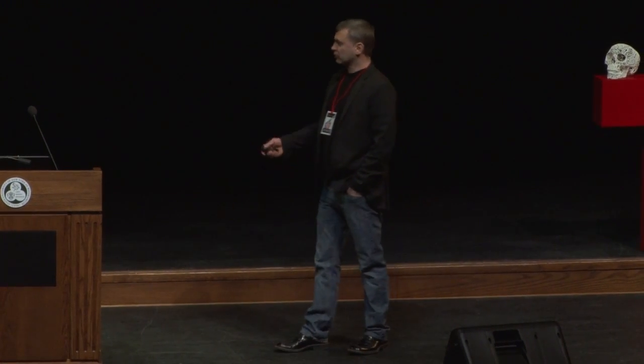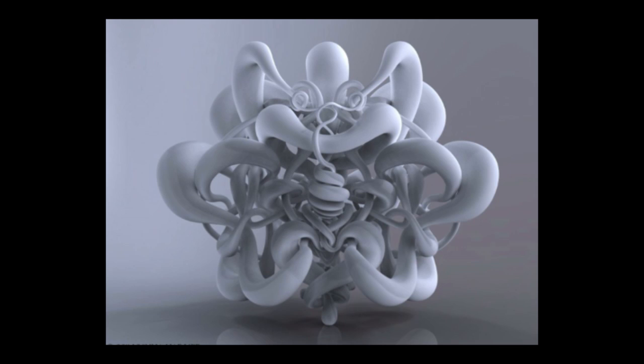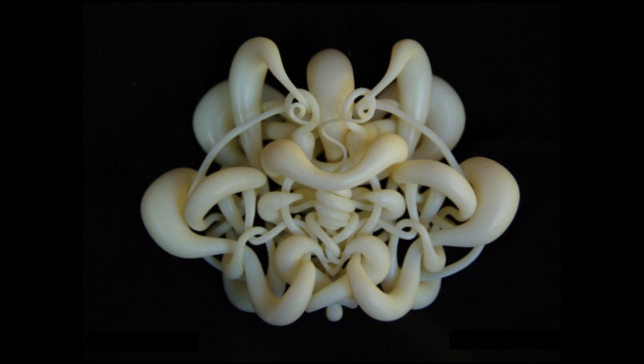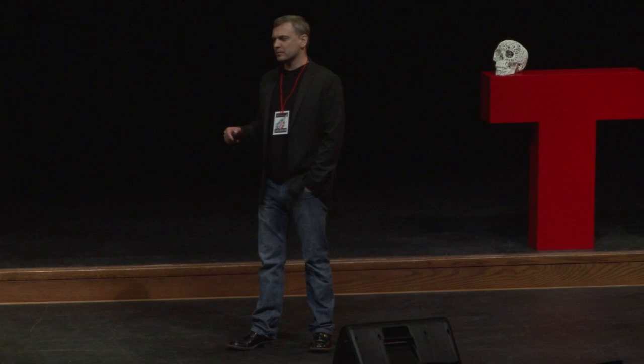This is a render of my first tangle. This is called Permutation Prime. And this is the very first print. I did this on a polyjet printer, and I was doing backflips — this was great news for me. It was really exciting.